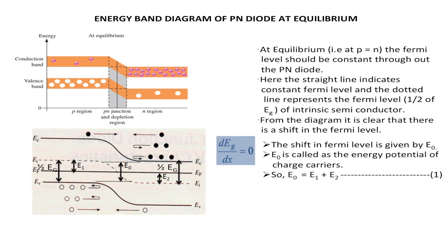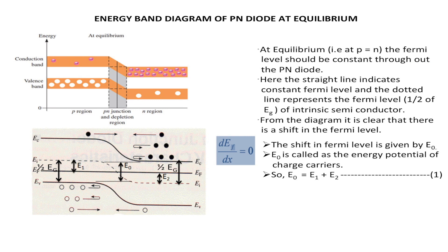So there happens a shift in our energy band diagram. That shift is mainly due to the movement of electrons from N type material to the conduction band and movement of holes from P type material to the valence band in the N type material. This shift should be overcome. In order to overcome this shift, we are going for a detailed structure of this energy band diagram, and we can see that towards the depletion region only the shift is happening. So in order to overcome this shift, we are going to calculate the energy potential of the electron, represented by E0.